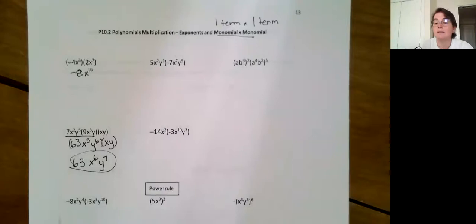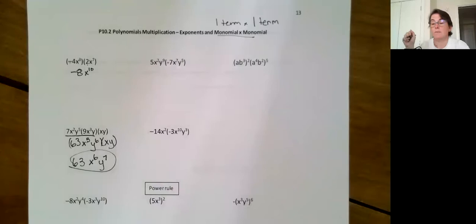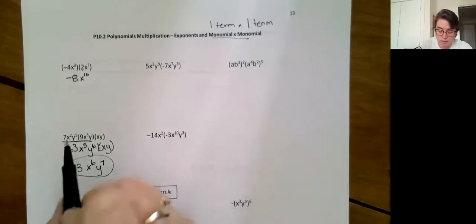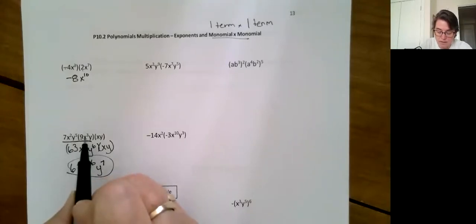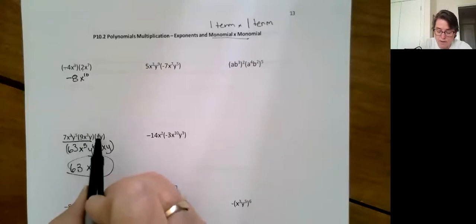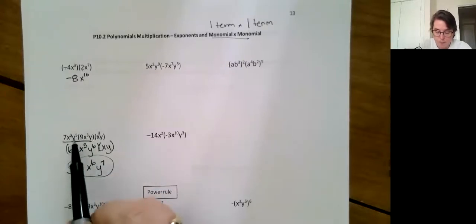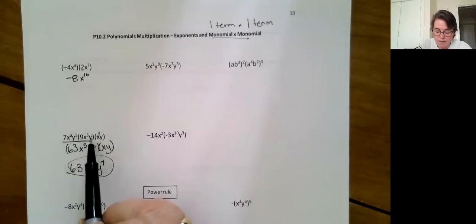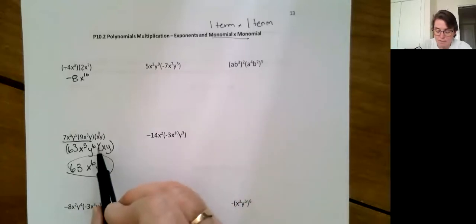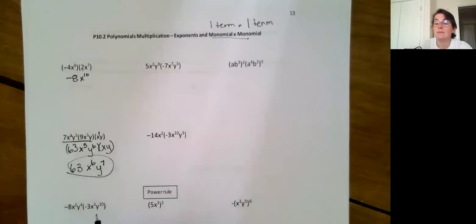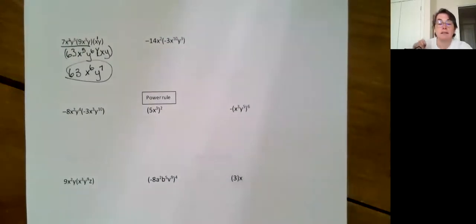Because this only works with monomial times monomial times another monomial, you can actually do them all at once. You can go seven times nine is 63, x squared times x to the three, add your exponents two and three is five and one more gives you six. Y to the fifth and another y is y to the sixth and another y is y to the seventh. If you're not great in math or you're uncomfortable, do the steps. First you get good, then you get fast.